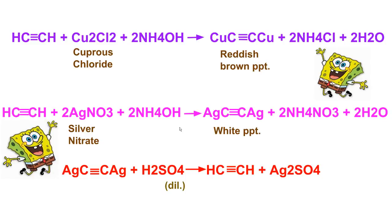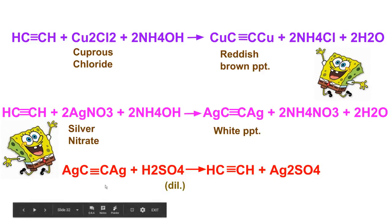In this way, these reactions can also be used as a test for alkynes. Silver and copper acetylides can also react with acids to regenerate alkynes. These alkynides or acetylides are used for the preparation, purification, separation, and identification of alkynes.